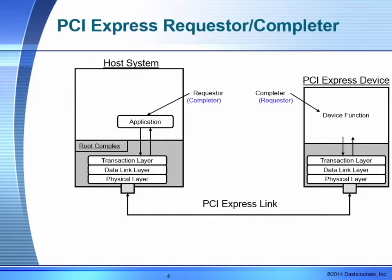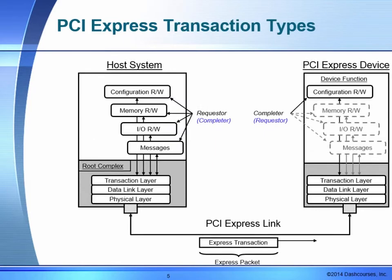We're familiar now with the requester-completer model. The host system sits at the root complex as the application and is called the requester. It makes requests from a completer, which can also be a requester if it sends data. This is passed through the PCI Express three-layer stack. The host system is capable of generating configuration read-writes, memory read-writes, IO read-writes, and messages.